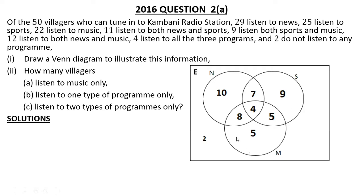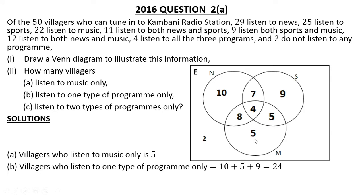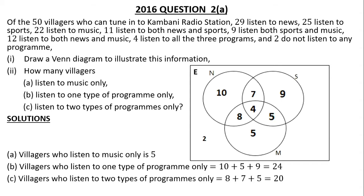How many villagers listen to music only? We have 5 villagers who listen to music only. How many villagers listen to one type of program only? We have 10 who listen to news only, 9 who listen to sports only, and 5 who listen to music only, so we add 10 plus 9 plus 5, which gives us 24. For those who listen to two programs: 8 listen to news and music, 7 listen to news and sports, 5 listen to sports and music — so 8 plus 7 plus 5 gives us 20.